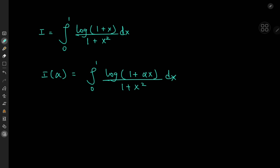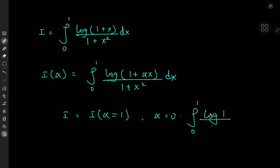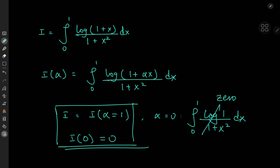What is the motivation for placing the alpha parameter there? Our target integral I is the integral function evaluated at alpha equal to one. And if we use alpha equal to zero, we get the integral from zero to one of log(1) divided by 1+x² dx, and log(1) is zero. So the entire thing collapses to zero, giving us a very convenient initial condition: I(0) = 0.